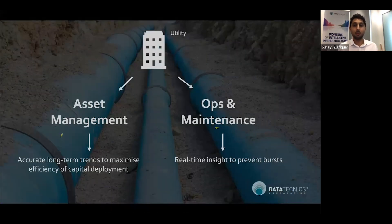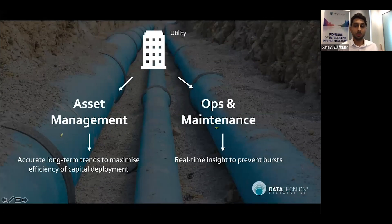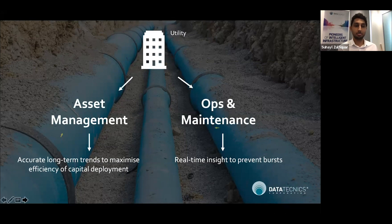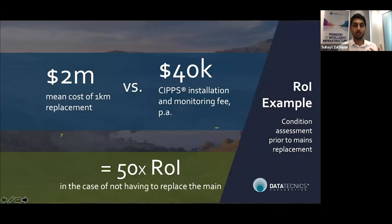In doing this, we're looking to deliver two broad benefits to our customers. For asset managers struggling with tight budgets, we can ensure that every single dollar spent is deployed in the most efficient manner possible, replacing only those pipes that absolutely have to be replaced. For ops teams, we can help them transition away from a reactive repair model to a proactive maintenance model, ensuring better continuity of supply to customers and preventing environmental fouling.